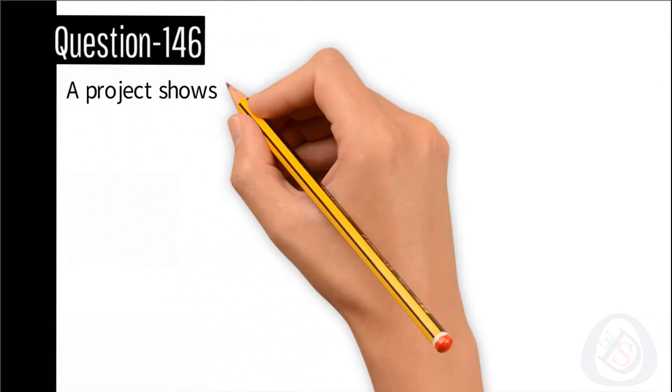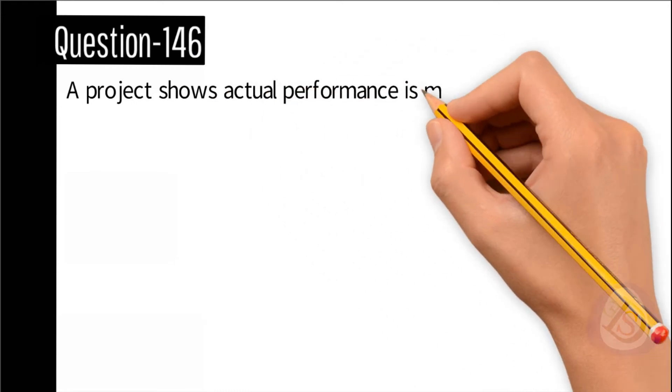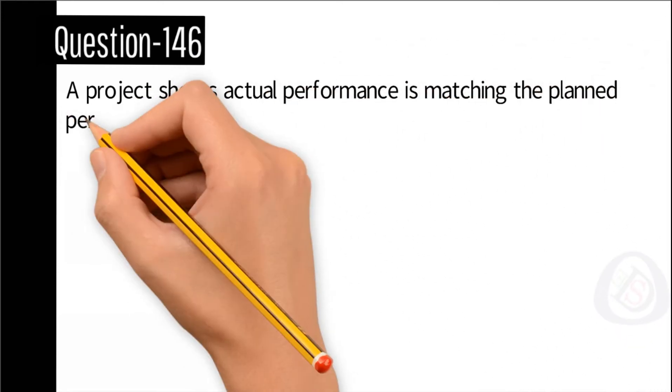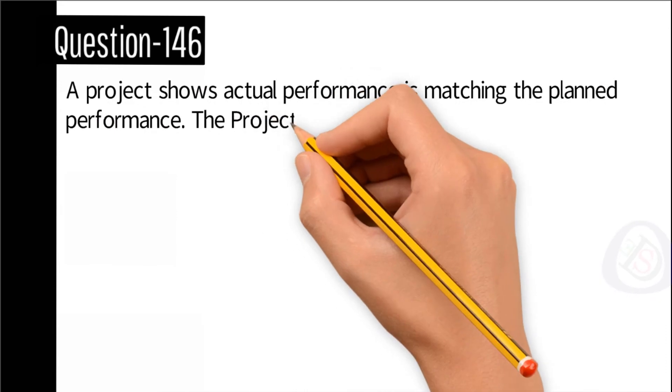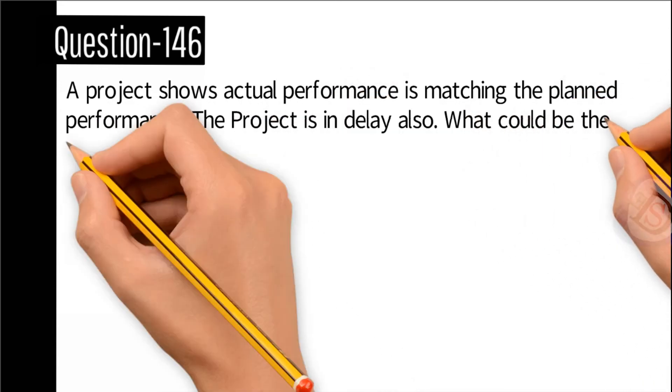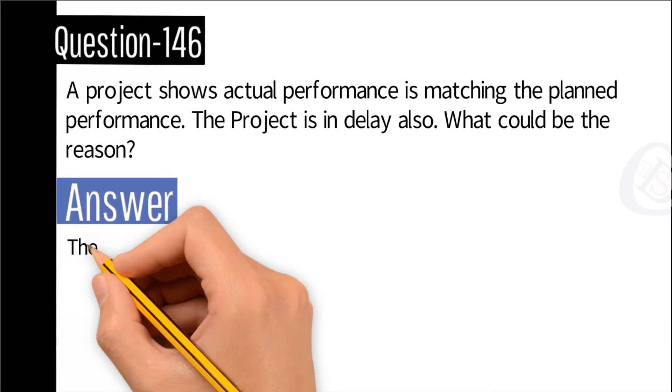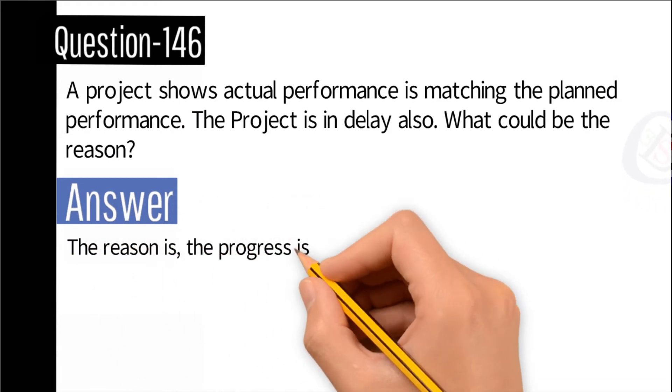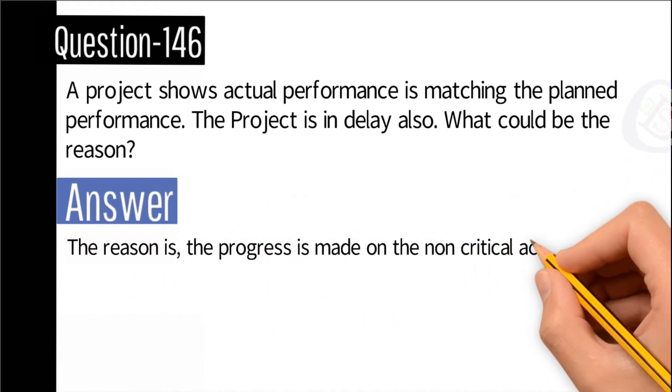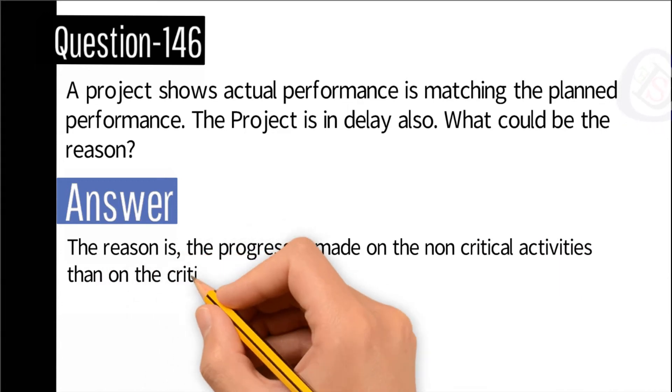Question number 146: A project shows actual performance is matching the planned performance. The project is in delay also. What could be the reason? Answer: The reason is the progress is made on the non-critical activities rather than on the critical activities.